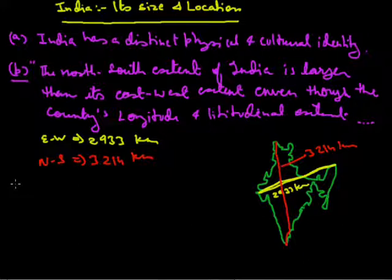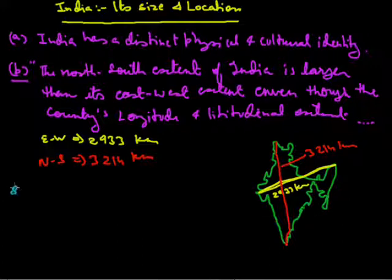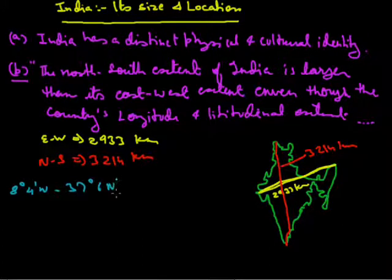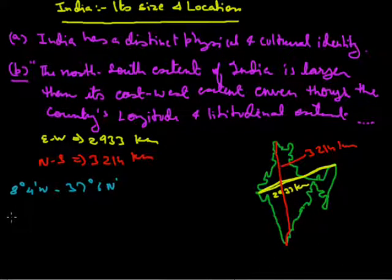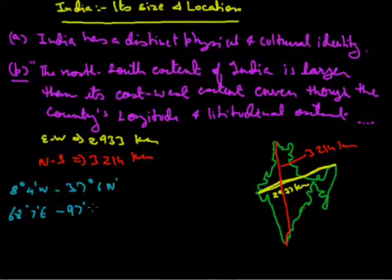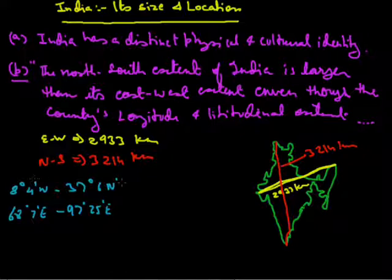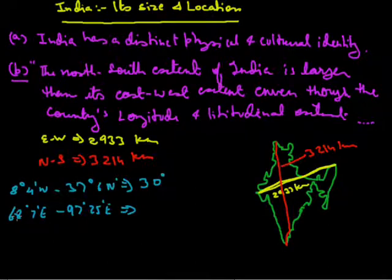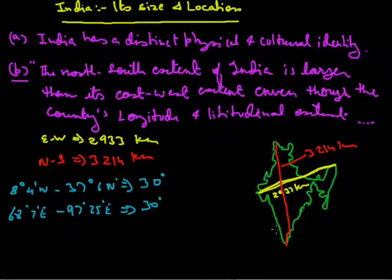Now I am writing the latitudinal and longitudinal extent of India again. Latitudinally, India extends from 8 degrees to 37 degrees north, and longitudinally from 68 degrees 7 minutes east to 97 degrees east. The difference between 8 and 37 degrees is 30 degrees. Similarly, the difference between 68 and 97 degrees is also 30 degrees. So India spans 30 degrees from north to south and 30 degrees from east to west.